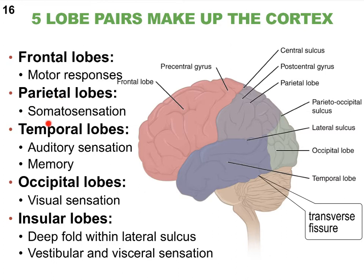Your parietal lobes are involved in something called somatosensation — that is where we receive information about the environment related to touch, for instance. Your temporal lobes are especially involved in hearing, but also memory. Occipital lobes are responsible for receiving and interpreting information about sight — visual sensation is an important function of the occipital lobes.